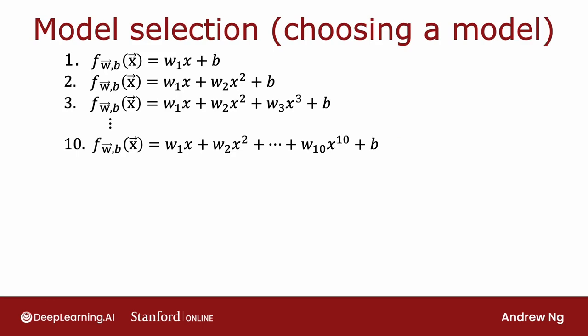Let's take a look at how this affects how we might use a test set to choose a model for a given machine learning application. If fitting a function to predict housing prices or some regression problem, one model you might consider is to fit a linear model—a first-order polynomial. I'm going to use d equals 1 to denote fitting a first-order polynomial. If you fit this model to your training set, you'd get some parameters w and b.